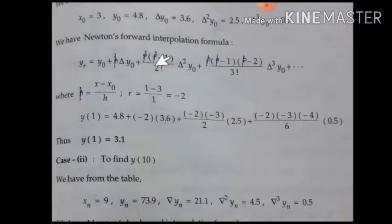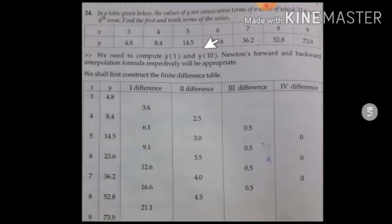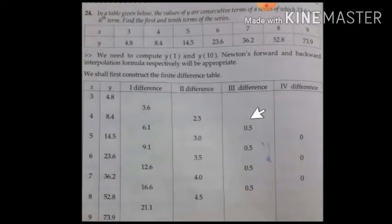In Newton's forward formula, we use the first values from each difference column: the first value of the first difference, the first value of the second difference, and the first value of the third difference. These are the Δy₀, Δ²y₀, Δ³y₀ values that we substitute into the formula.